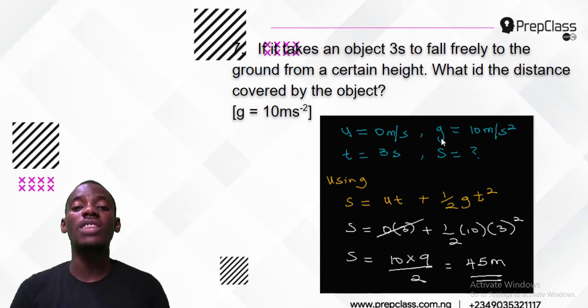The equation that has all these parameters - U, g, t, and s - is s = Ut + ½gt². This is the one that has all the parameters, so I'll plug them in.